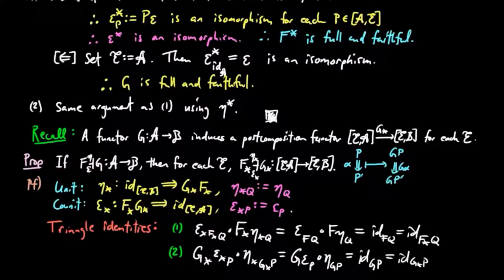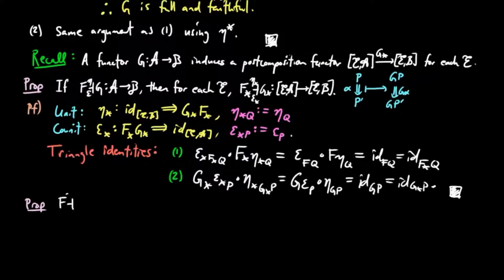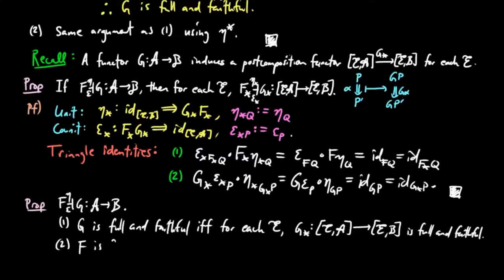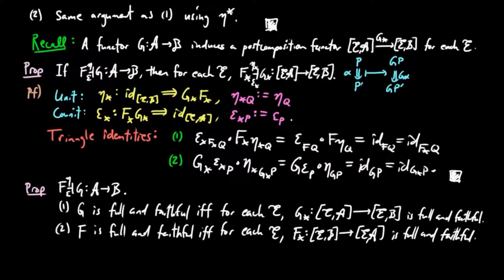We also have: if F⊣G is an adjoint situation, then (1) G is full and faithful if and only if for each category E, G_* is full and faithful; and (2) F is full and faithful if and only if for each category E, F_* is full and faithful. The proof in this case is absolutely clear.